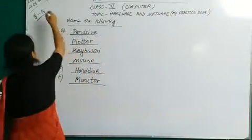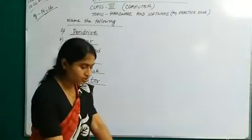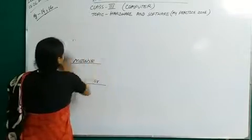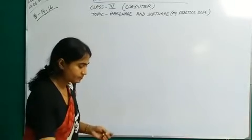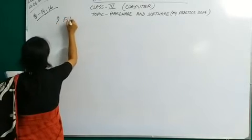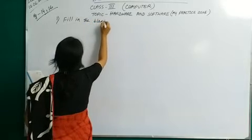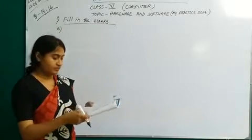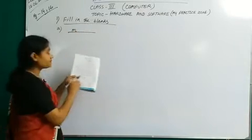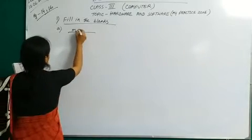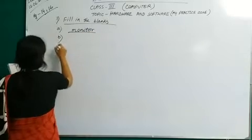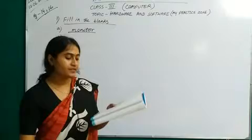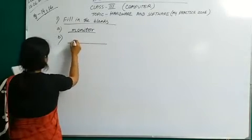My Practice Zone — please open page number 16. Objective type questions. Number 1: Fill in the blanks. Number A: A dash displays output on the screen. Answer — a monitor. I will write only the answer; in the blank spaces in your book, you will write the answer. Number B: An operating system is an example of dash. Answer — system software.